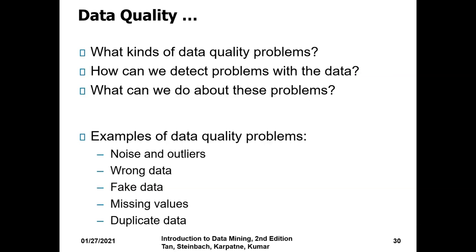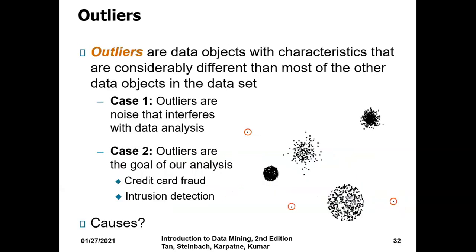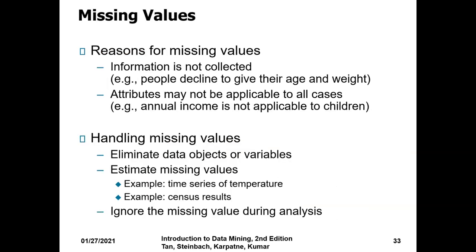Missing values if there are some missing values not provided due to privacy or other reasons, and duplicate data. These are certain examples. You can see how noise is added to the original value. Outliers are these three dots in red colors that are circled. These are the points which are away from the bunch.